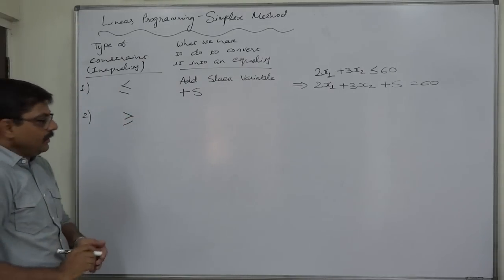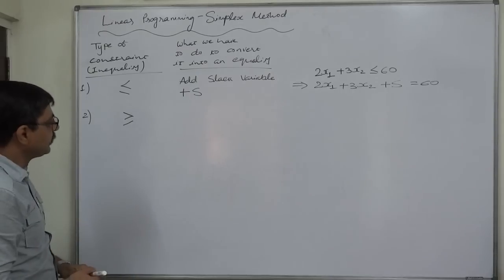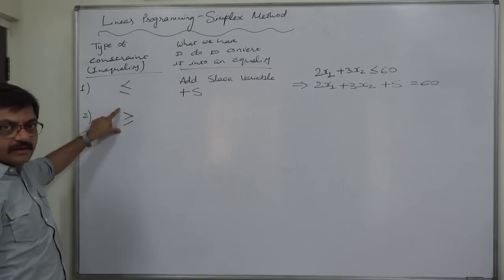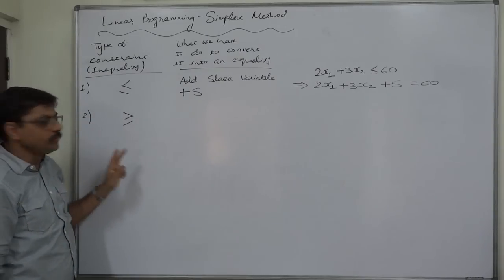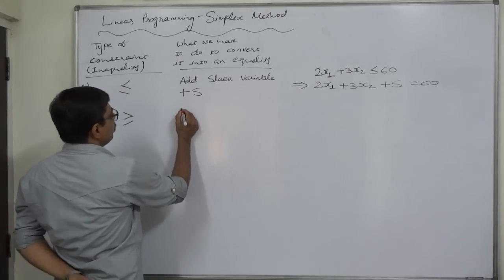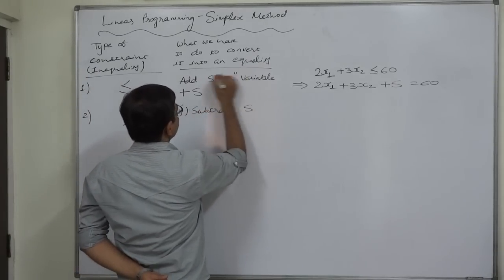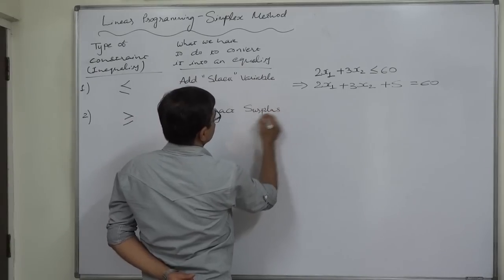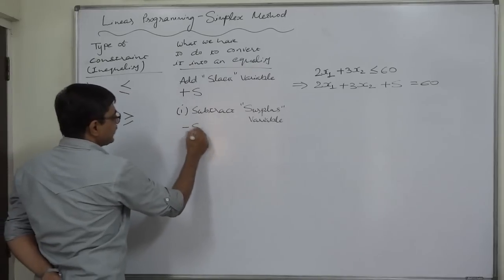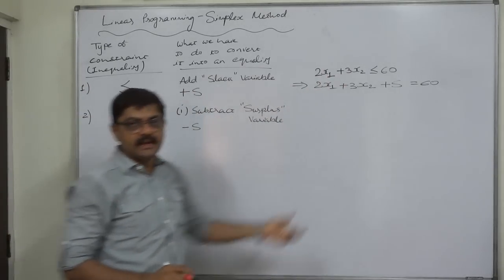In the case of greater than or equal to, we treat the two signs separately. Unlike the less than or equal to sign (treated as a single sign), the greater than or equal to sign is treated as a combination of two signs. For the greater than part, we subtract a surplus variable. We use s for surplus, but note it is subtracted — exactly opposite to the slack variable.